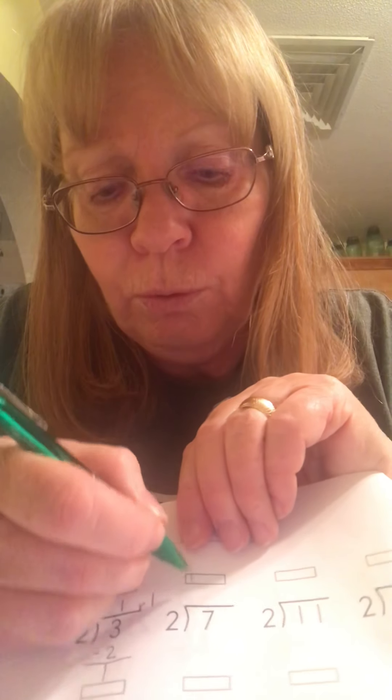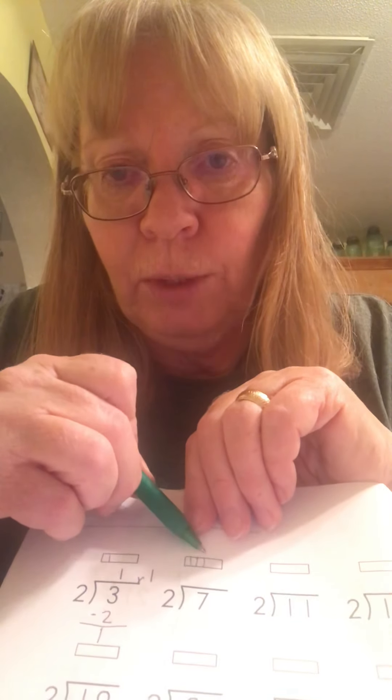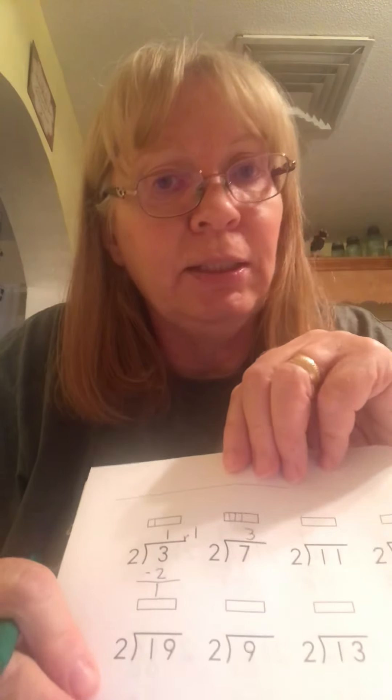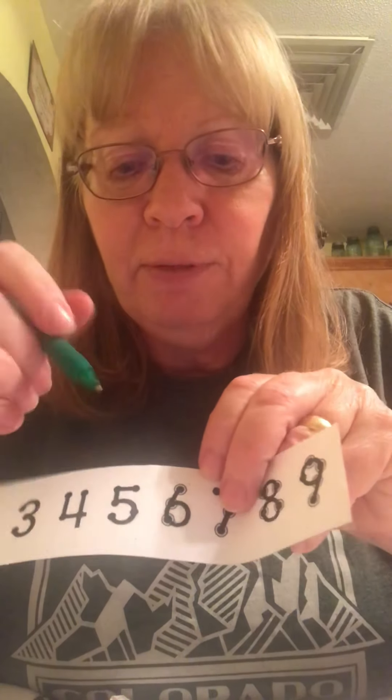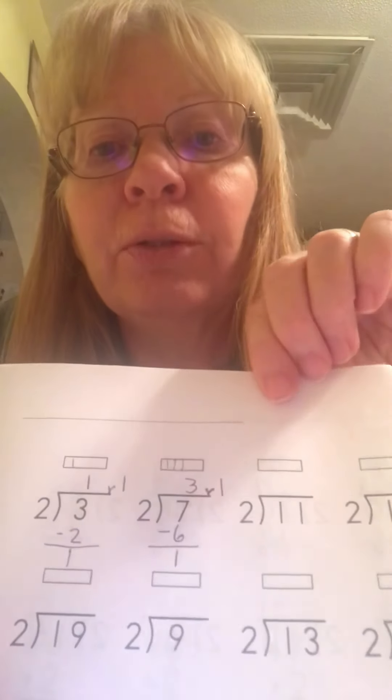Let's try the next one — 7 divided by 2. That's going to be 2, 4, 6. If I do one more, that's 8, so that's too many. So I've got 1, 2, 3. The 3 goes above the 7. Then 2 times 3 is 6, the 6 goes under the 7. I subtract — 7 minus 6 is 1. So 1 goes underneath, giving us a remainder of 1. I'm writing an R for remainder, so it's 3 remainder 1.